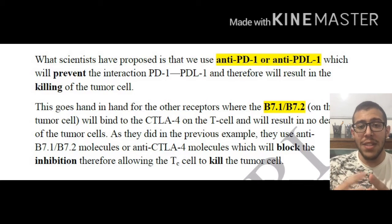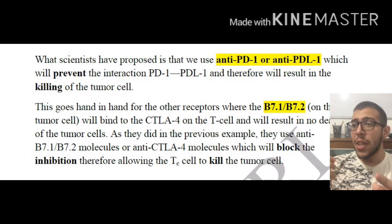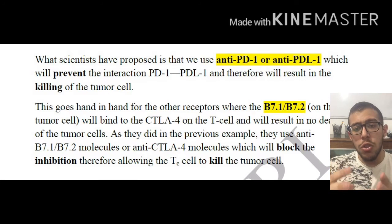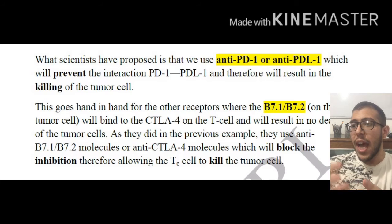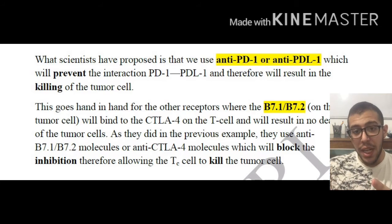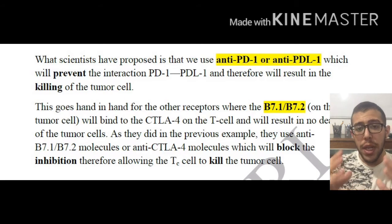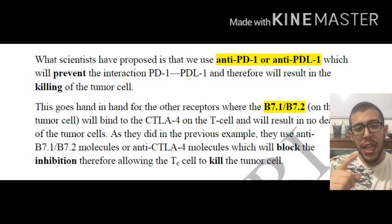Scientists have devised different techniques — binding antibodies or other small molecules onto these CD28 receptors — blocking the inhibition and thereby allowing the cytotoxic T cell to kill the tumor cell. In essence, we are blocking the inhibition.